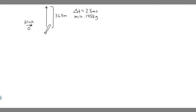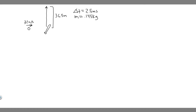So we have this ball being pitched towards this bat at 32 meters per second, and then it gets hit straight up to a height of 36.5 meters. We're given the contact time — the change in T — which is 2.5 milliseconds, and we're also given the mass of the ball, which is 0.145 kilograms.